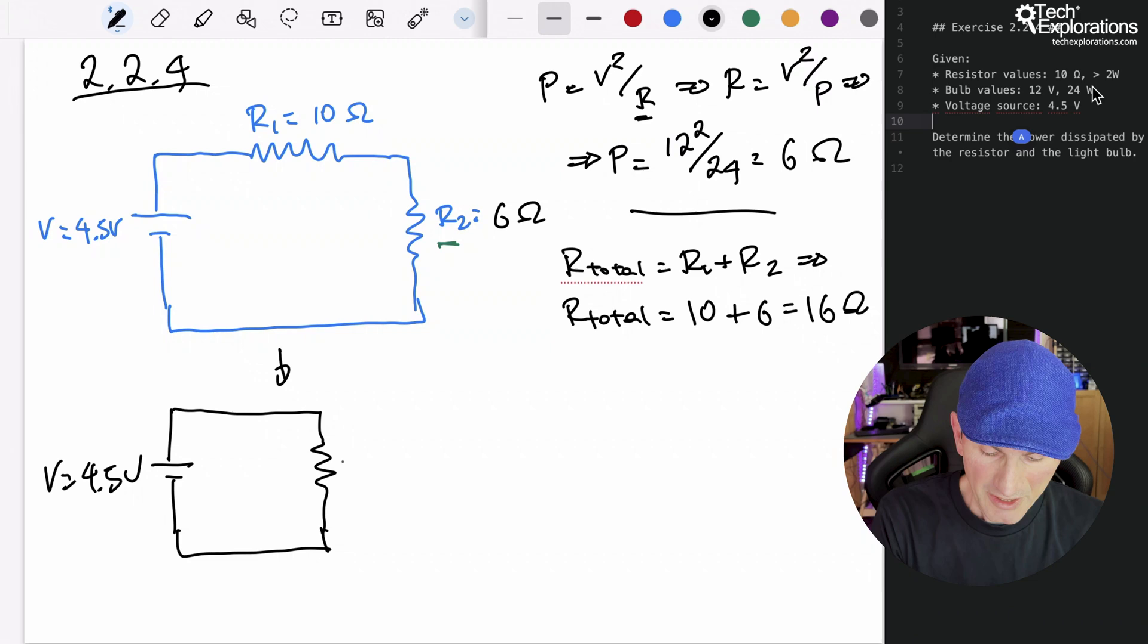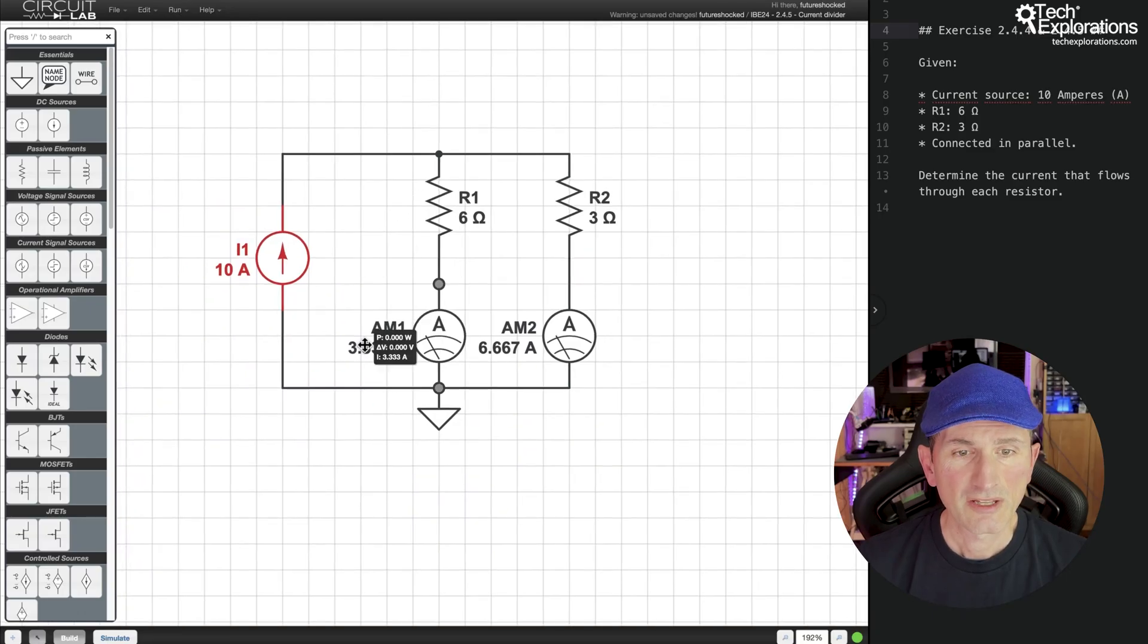But of course it doesn't stop there. You'll also learn how to work with three critical tools that every engineer or hobbyist needs: mathematics, simulators and bench test instruments. Mathematics helps us understand the relationships between voltage, current, resistance and power through concepts like Ohm's law and Kirchhoff's laws. These calculations will allow you to predict how a circuit will behave.